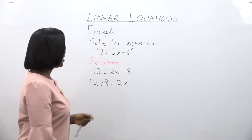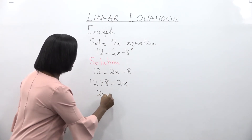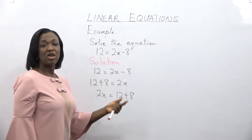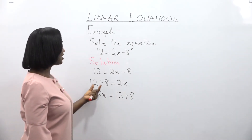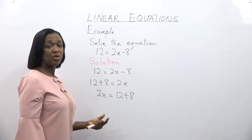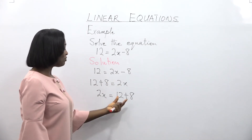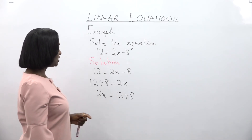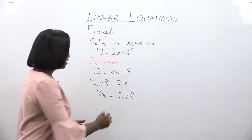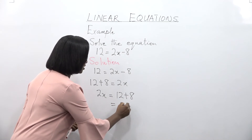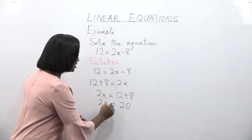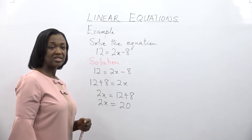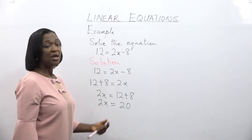We will send negative 8 to the other side of the equation. So it becomes 12 plus 8 is equal to 2x. This is the same thing as writing 2x is equal to 12 plus 8. As long as the left hand side and the right hand side are equal, you can write one before the other. So 2x is equal to 12 plus 8, and 12 plus 8 is equal to 20. If 2x is equal to 20, to find the value of x, we divide both sides by 2.